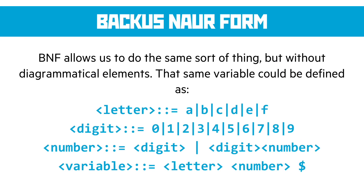BNF, or Backus-Naur form, is a way of expressing the same thing without a diagram. We use angle brackets to define the names of things, two colons and an equals sign, and on the right-hand side we define what we're doing. Vertical lines mean 'or' and items placed together mean 'and.' So a letter is A or B or C or D or E or F; a digit is any single number; and a number is a digit or a digit followed by a number — meaning a number can be 0, or it can be a multi-digit value like 056792. It's recursive — it keeps looping back on itself. Finally, a variable is a letter and a number and a dollar sign.